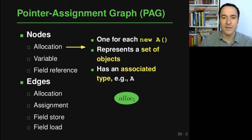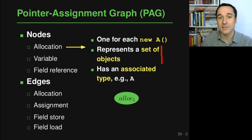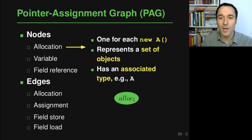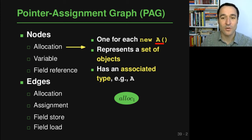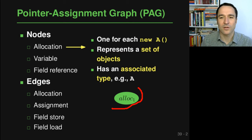Let's go through those in more detail, starting with the allocation node. There is one such node for every location in the program where some constructor is called. These constructor calls are called allocation sites, and therefore these nodes are called allocation nodes. This node represents the set of objects that are created at this code location — even if the location may be reached multiple times, for example because it is in a loop, all objects created there are represented by this one node. This node also always has an associated type, because you know what constructor is called here.